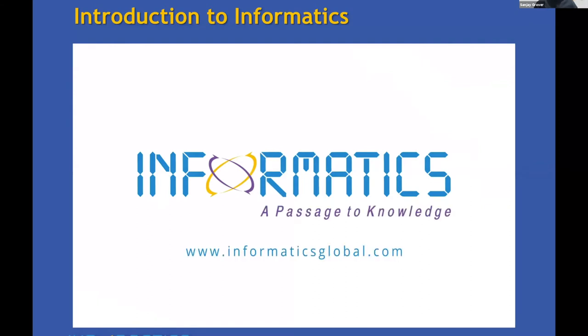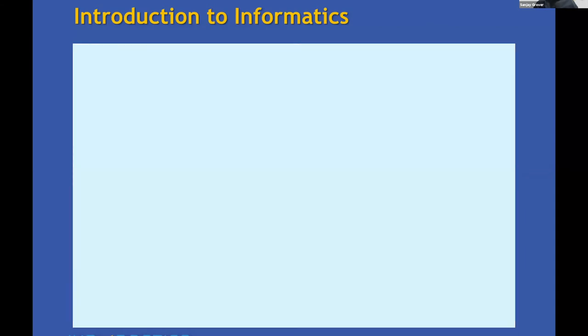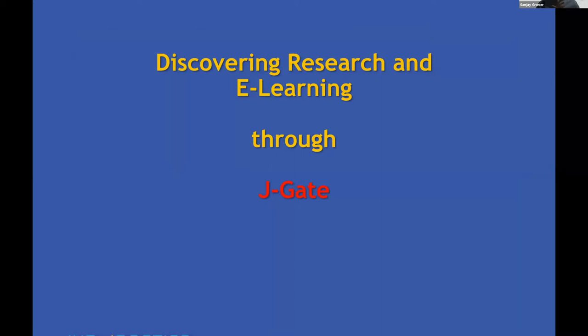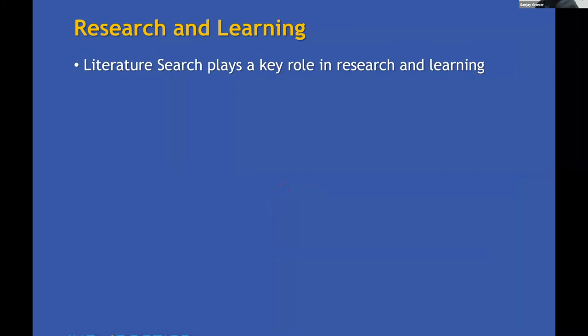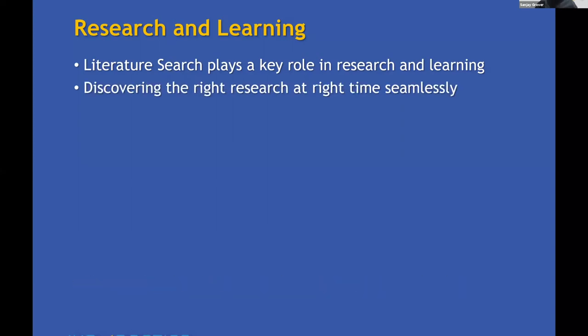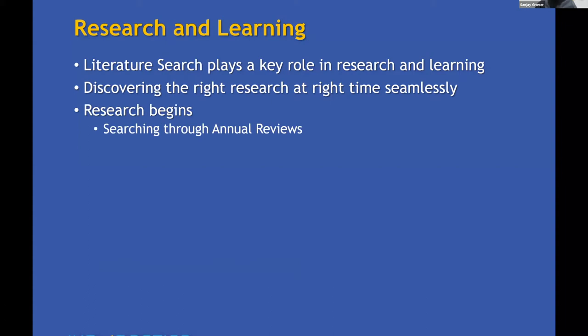That was a brief about Informatics. Moving to the business agenda now, I'd like to talk about discovering research and e-learning through a platform called J-Gate. Let me go back to the basics. We are talking about e-learning and research — and literature search plays a very key role in the process of both research and learning. Discovering the right research at the right point of time seamlessly is quite essential for a researcher. Research begins at two points: through annual reviews, which were considered a Bible to start research as they reviewed all the latest work and recommended unexplored areas.